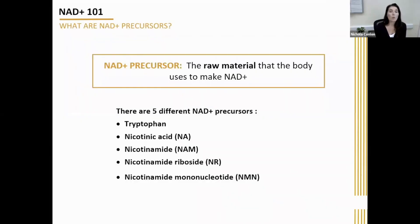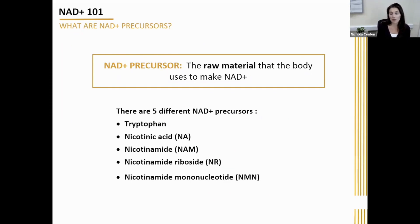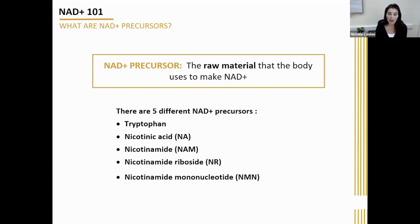So first of all, what I'm going to do is take you through NAD precursors. If you're familiar with the concept of boosting NAD, you'll have definitely come across the term NAD precursors. Basically, an NAD precursor is just the raw material that the body uses to make NAD. There are five precursors that the body can use to make NAD.